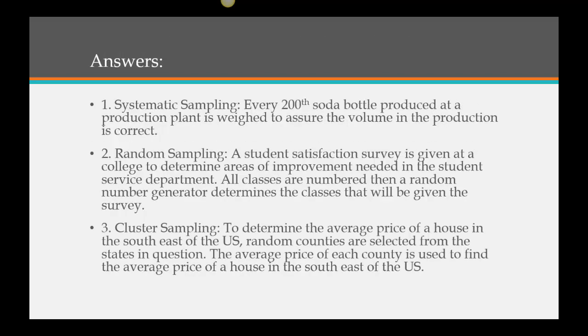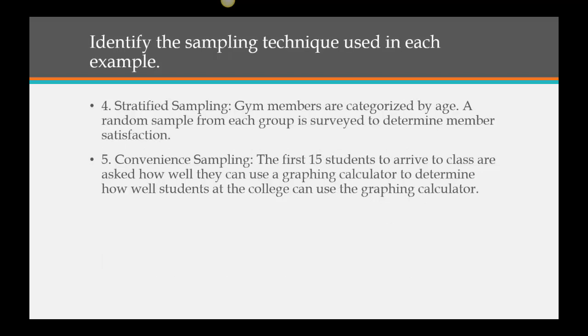Let's look at our different kinds of sampling. Example 1 — every 200th bottle — that would be systematic. Example 2 — the student satisfaction survey using numbered classes and a random number generator — that is random sampling. Example 3 is cluster sampling, because to determine the average house price in the southeast we selected certain regions of the state; that regional grouping made it a cluster. Example 4 — gym members categorized by age — shows stratification, so that is stratified sampling. And the last one, talking to the first 15 students to arrive at class, was just convenient sampling.